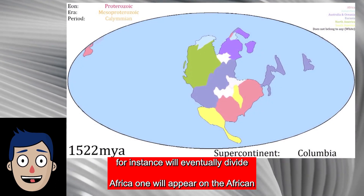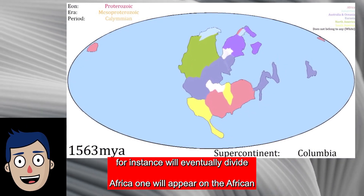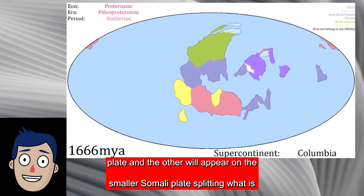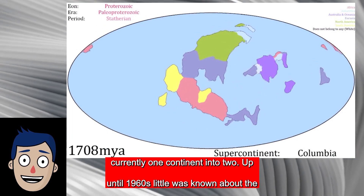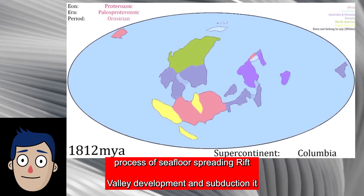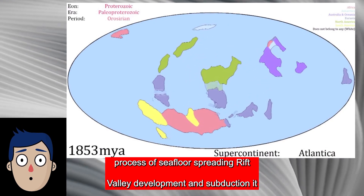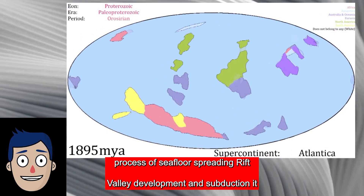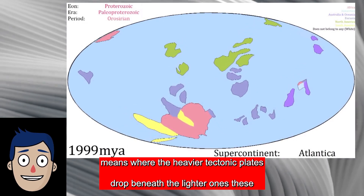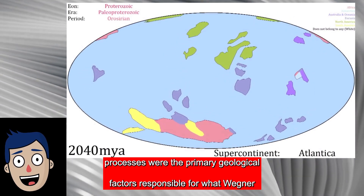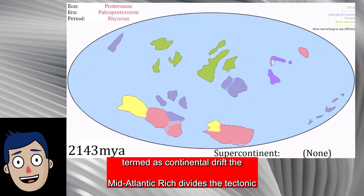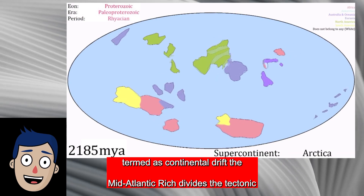The locations of rift valleys are where a continent is rupturing. The Great Rift Valley system, for instance, will eventually divide Africa — one part will appear on the African plate and the other on the smaller Somali plate, splitting what is currently one continent into two. Up until the 1960s, little was known about seafloor spreading, rift valley development, and subduction — where the heavier tectonic plates drop beneath the lighter ones. These processes were the primary geological factors responsible for what Wegener termed continental drift.